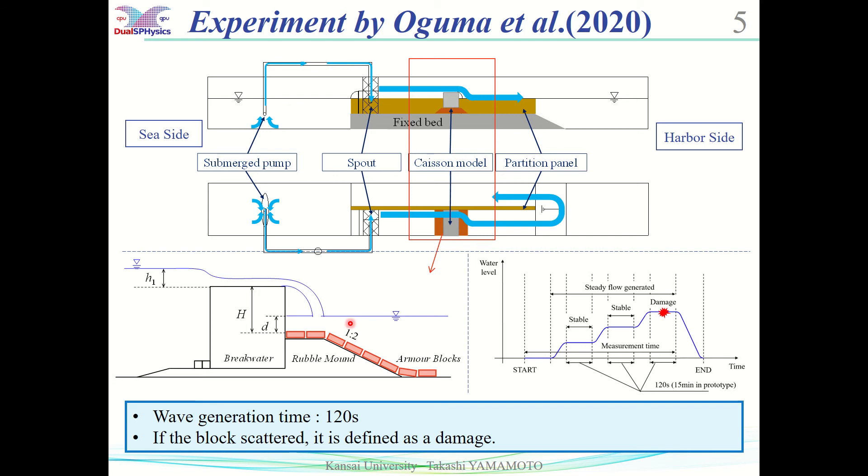This slide shows the overview of the experimental setup. A partition panel is used to divide the channel in half. A breakwater model is placed on one side, and the other side is used to calculate the circulation channel. The bottom left figure shows the caisson breakwater model. Armor blocks are installed behind the caisson.